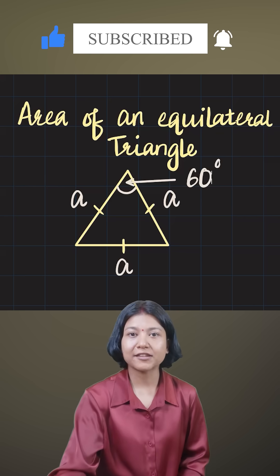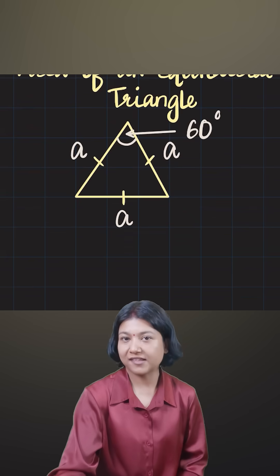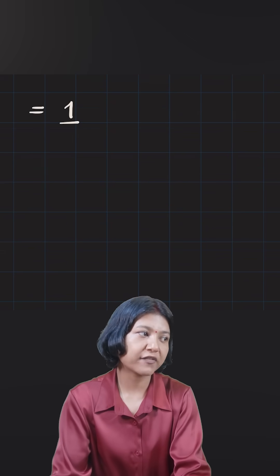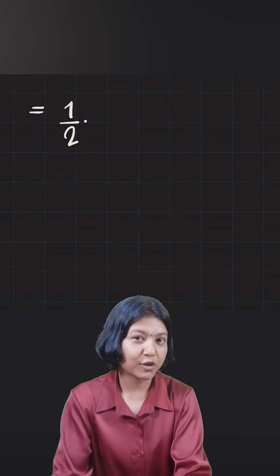So how to find the area of an equilateral triangle when you know just the side? In that case, I have told you the formula for area of any triangle, which is half times the product of the two sides.